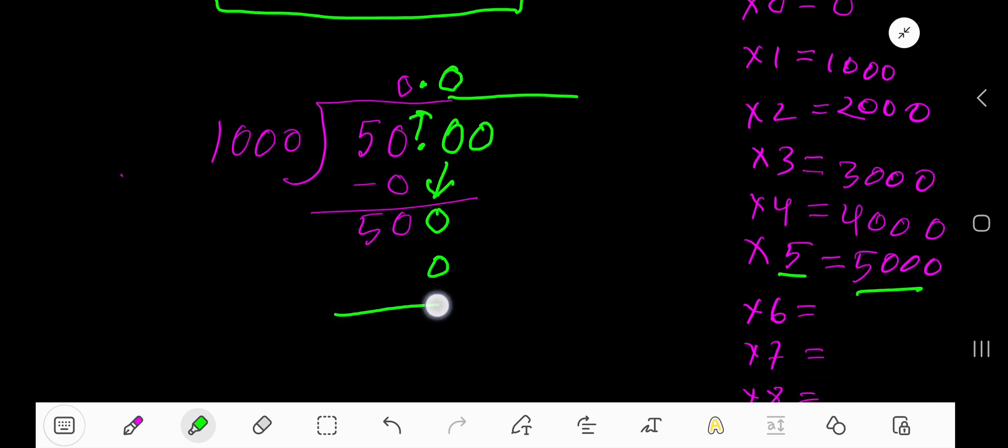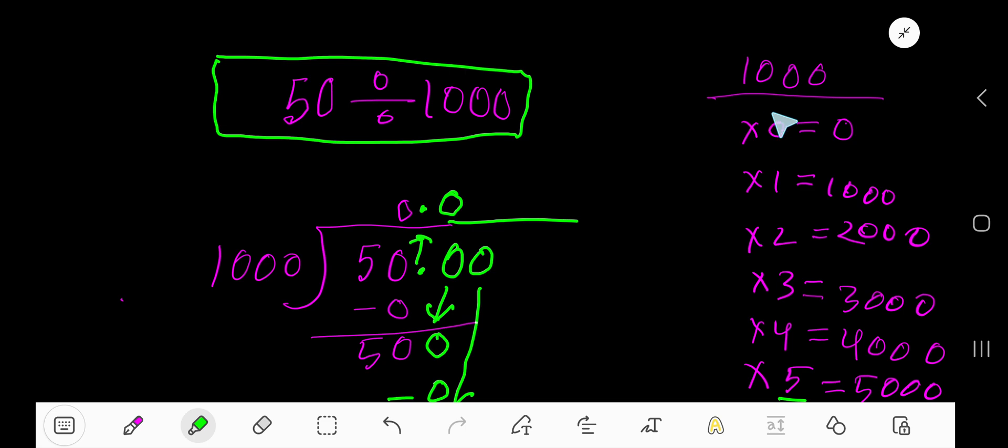,000 which is 0. If you subtract, you are getting 500. Bring down this zero, then 5,000. 1,000 goes into 5,000 how many times? 1,000 times zero is zero, one thousand times one is one thousand. Just add one thousand with